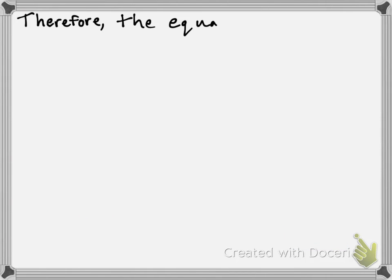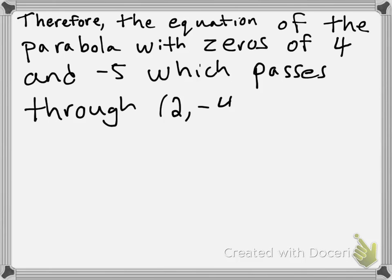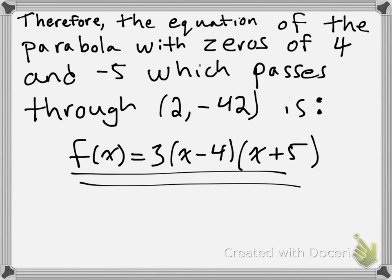So what we can say is, therefore, the equation of the parabola with zeros of 4 and negative 5, which passes through the point (2, -42), is f(x) = 3(x - 4)(x + 5).